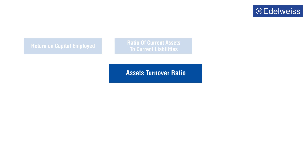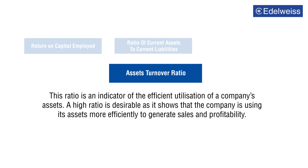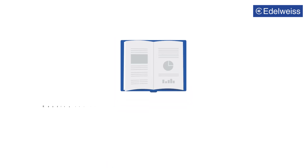Asset turnover ratio: this ratio is an indicator of the efficient utilization of a company's assets. A high ratio is desirable as it shows that the company is using its assets more efficiently to generate sales and profitability.